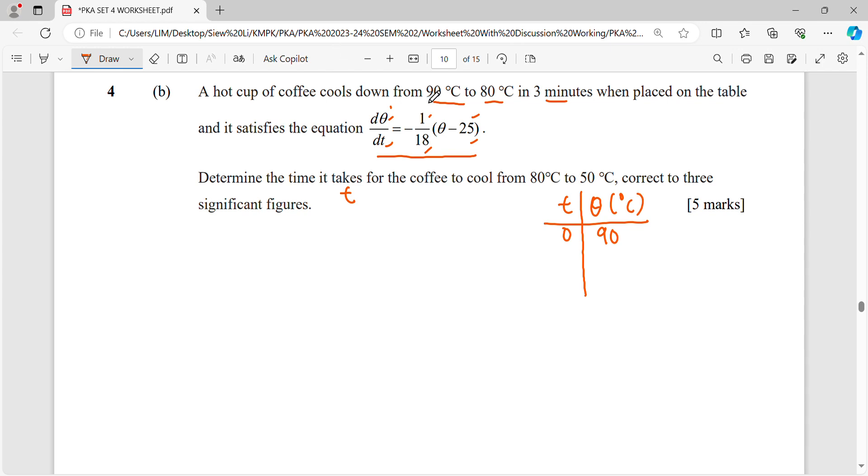So every story will start from when time is zero, initial value. So it starts from 90 to 80 Celsius in 3 minutes. So time here, the unit used is minute. Then they ask you what is your time from 80 cool down to 50 Celsius.